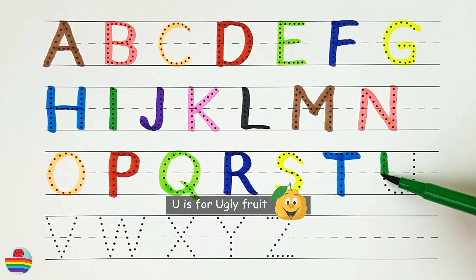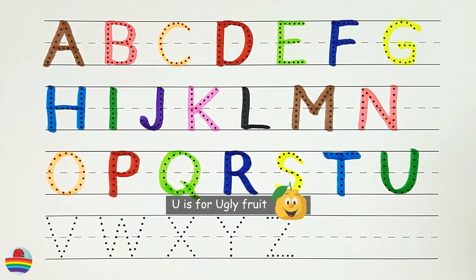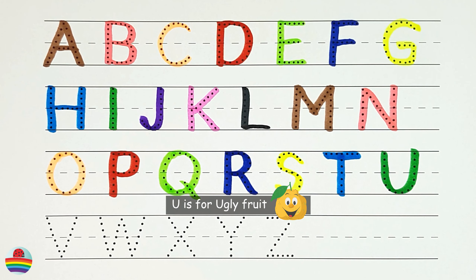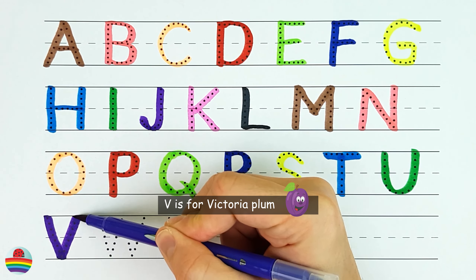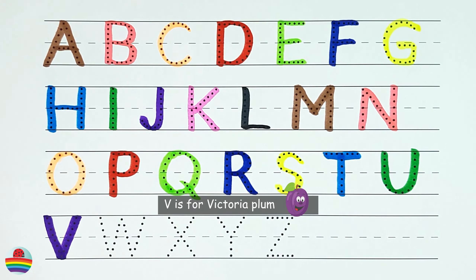U. U is for ugly fruit. U. V. V is for victoria plum. V.